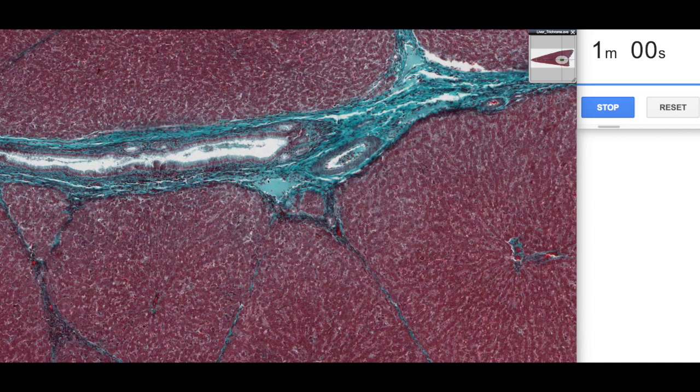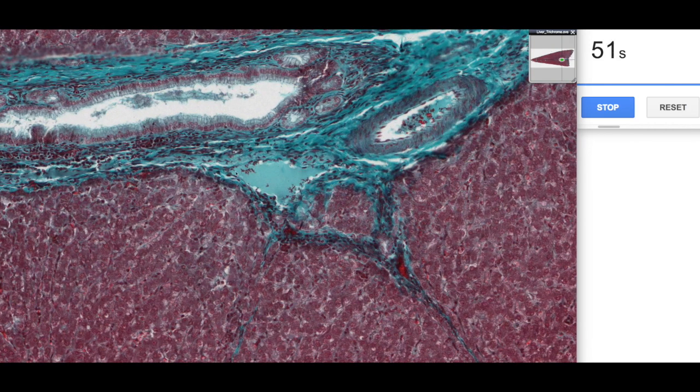The second blood supply is coming from a branch from the hepatic portal vein, and so this is a little venule. And if we zoom in a little bit more, you can just make out the lumen here. So it's not very obvious amongst the connective tissue because it's a thin walled vein.